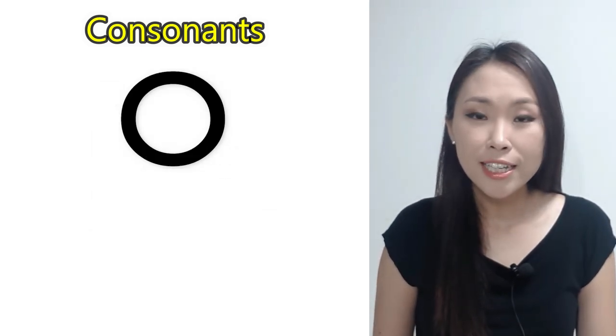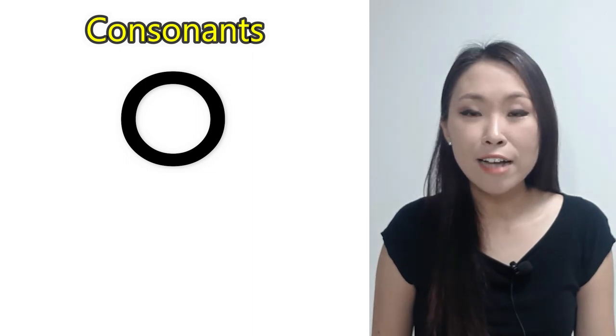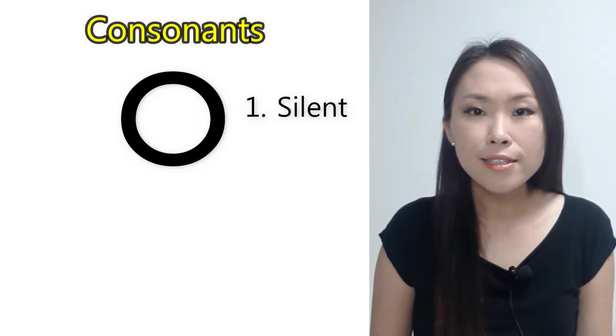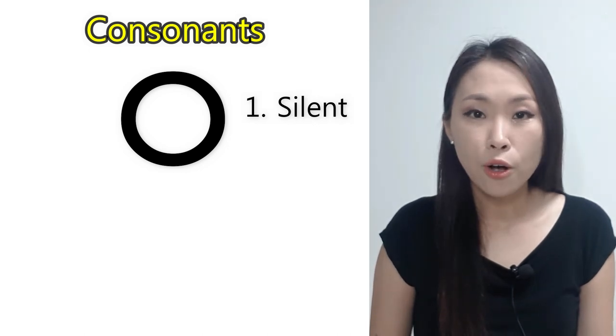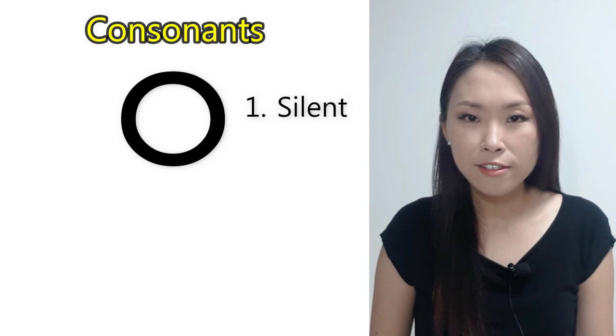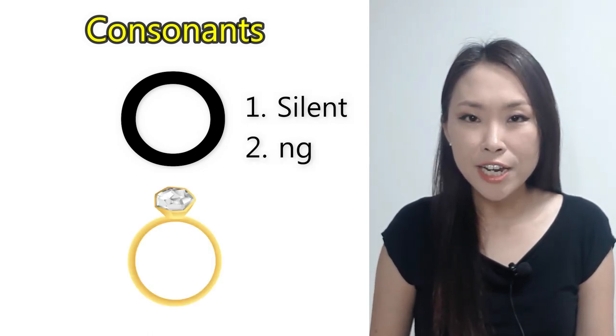The name of this consonant is 이응. It sounds two different ways. First, 이응 is silent. So, it has no romanized letter. Second, 이응 sounds like the letter NG in the word ring.